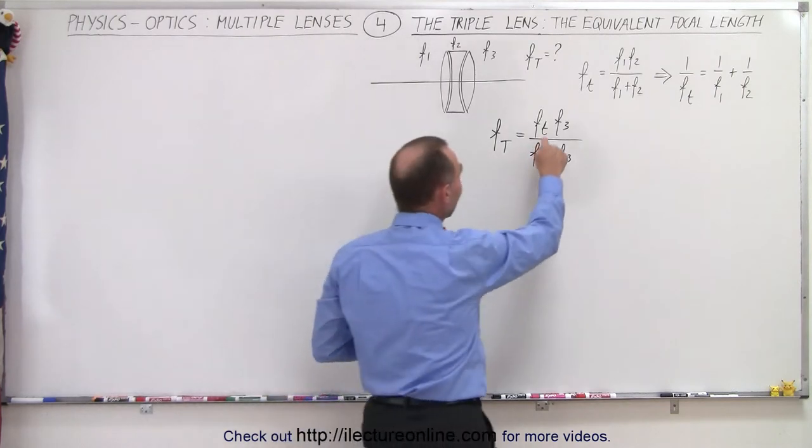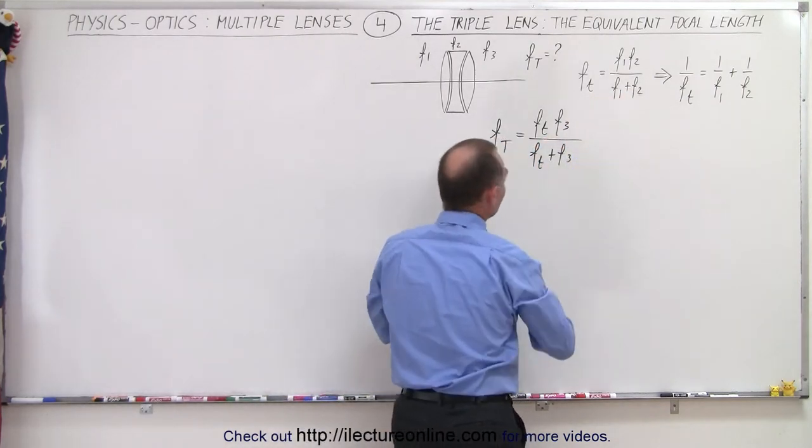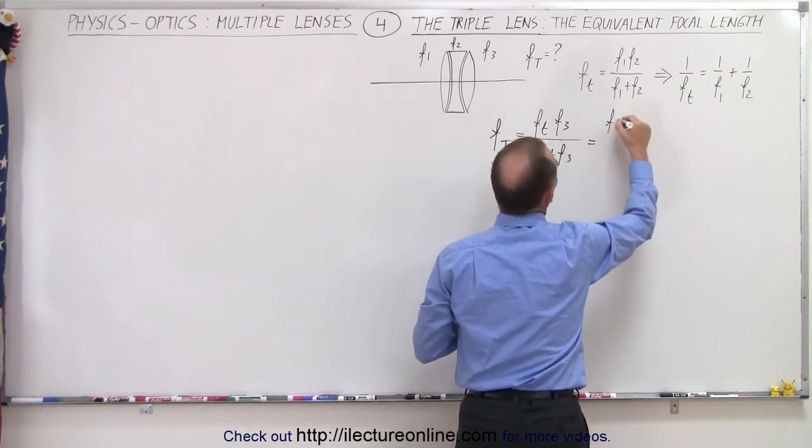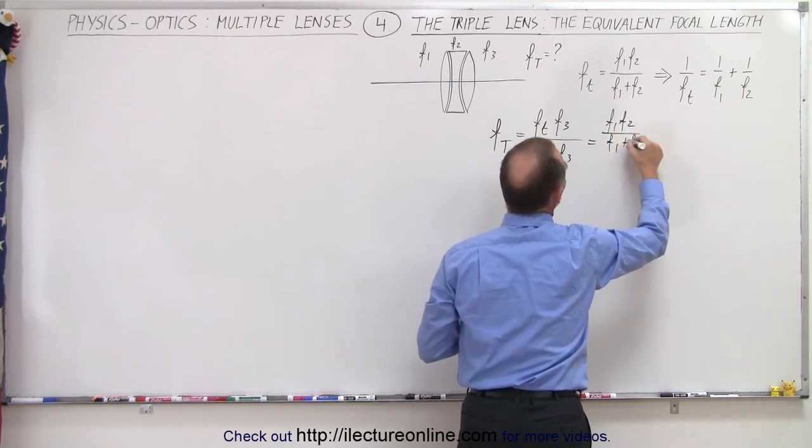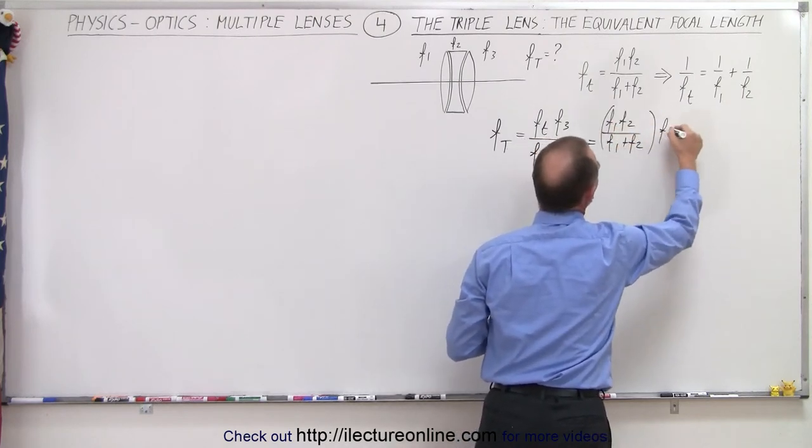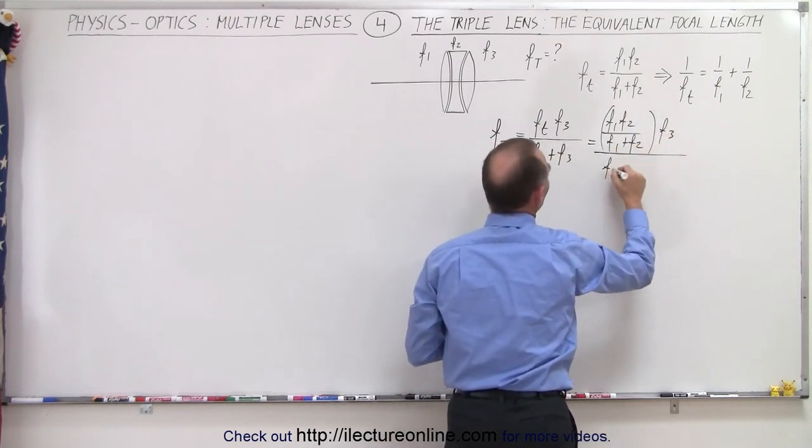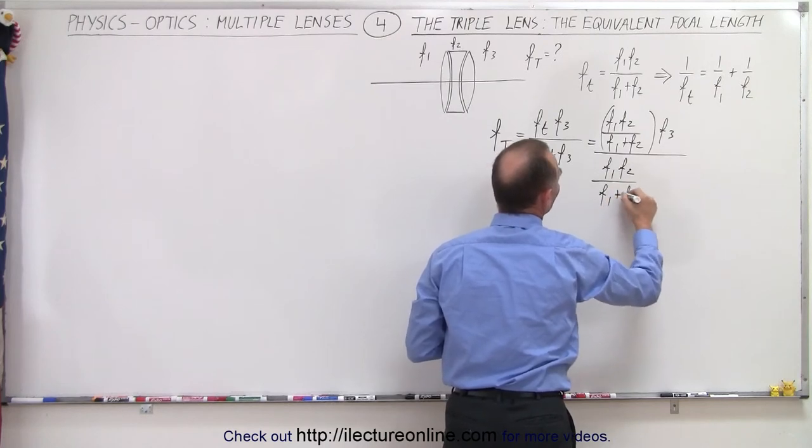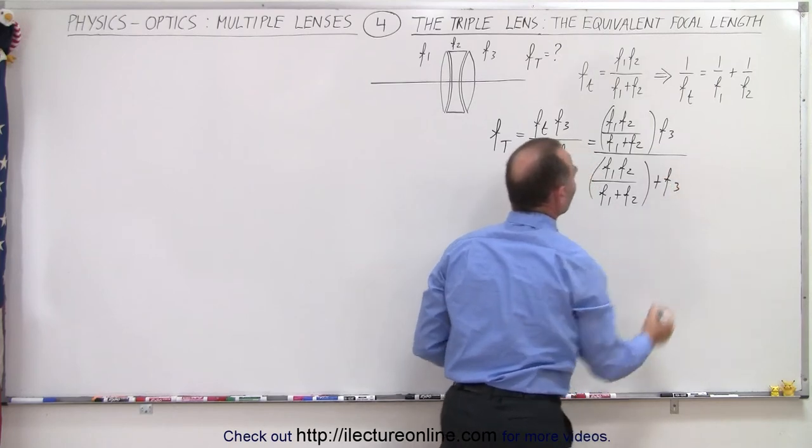Now we're going to replace what f small t is equal to, which is basically the focal length of the first two lenses. So this can now be written as the product f1 times f2 over f1 plus f2, multiplied times f3 and divided by, again, that's going to be written as f1 times f2 over f1 plus f2. But in this case, we're going to add the focal length of the third lens to that.